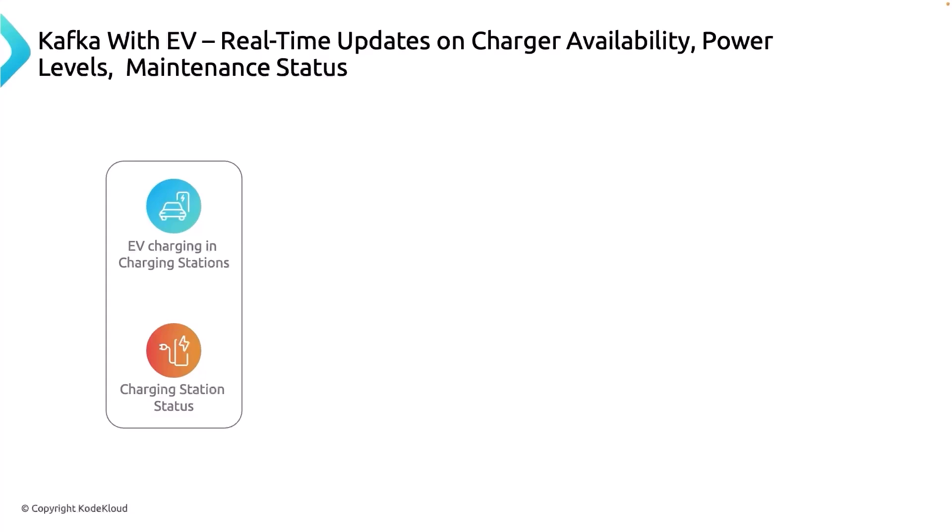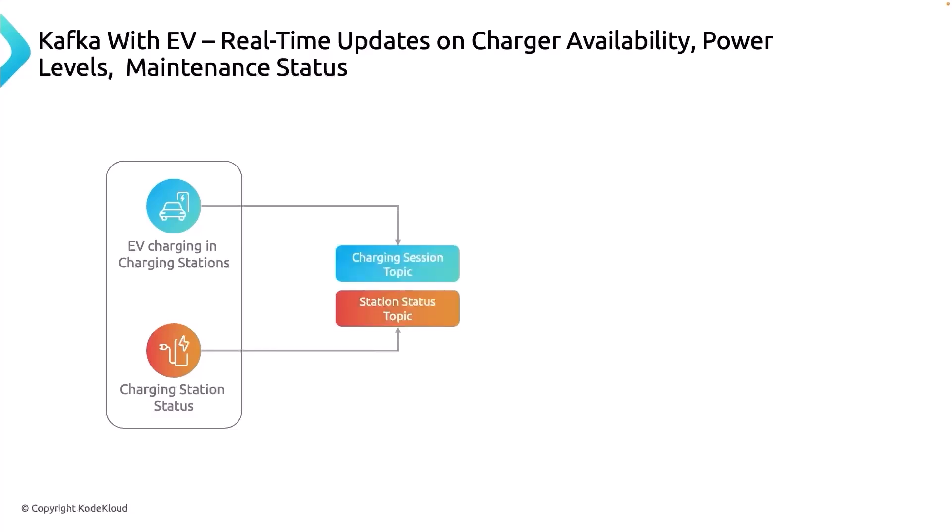There are two kinds of events: the status of the charging station itself, and for stations that have been used, how long they were in use so we can bill the user. These two events are sent to two separate topics for easier processing — charging session events go to the charging session topic, and free station information goes to the station status topic.